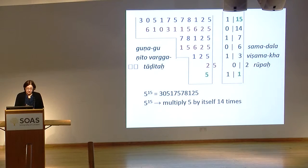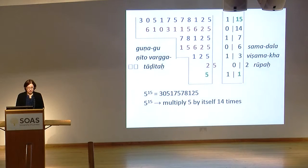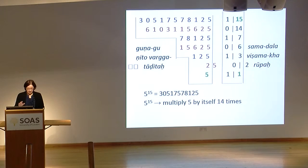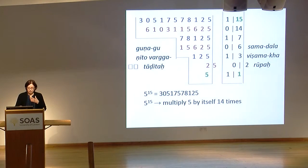This process is very well known. In famous texts like the Patiganita of Sridhara or the Lilavati of Bhaskaracharya, you have the same process, but instead of writing 1 or 0, one is supposed to write 'multiply' or 'square'.